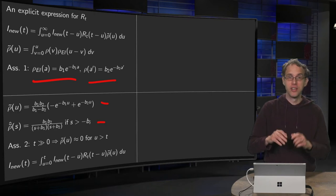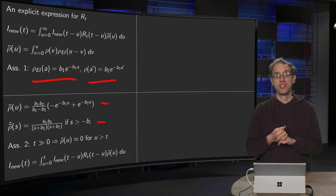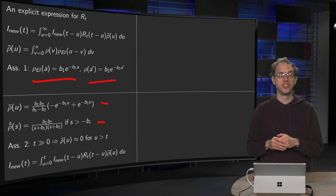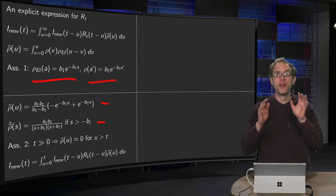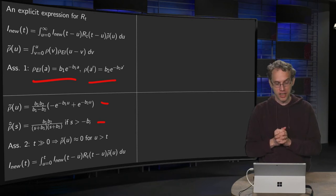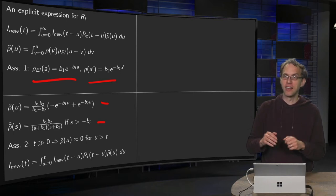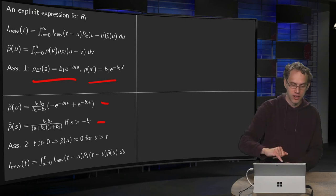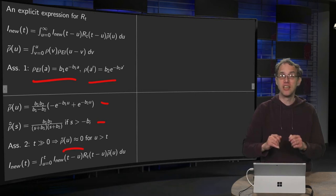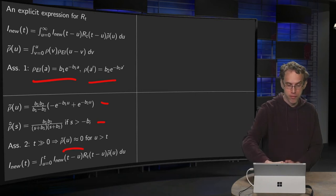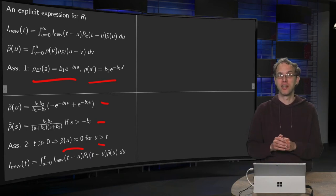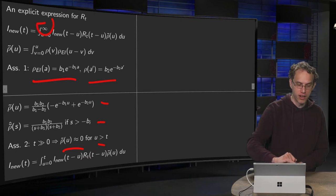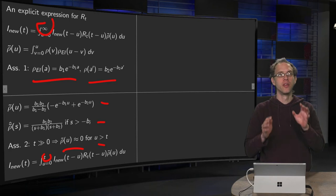Second assumption. T is much larger than zero. So that means your epidemic has been going on for a long time, much longer than the average incubation time and average infectivity time, much longer than your regeneration time. Okay. That's probably fine. So you're basically talking about an epidemic which has been going on for months. That's usually okay. So that means basically that your rho tilde of u is zero for u bigger than t. So that means that you can replace the upper boundary infinity by upper boundary t.